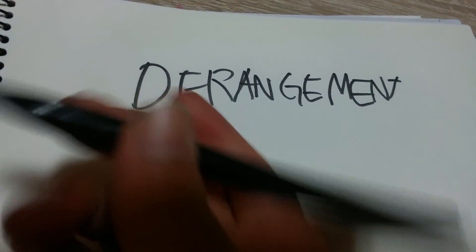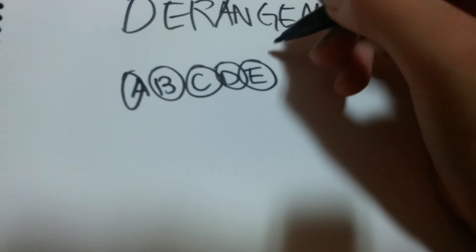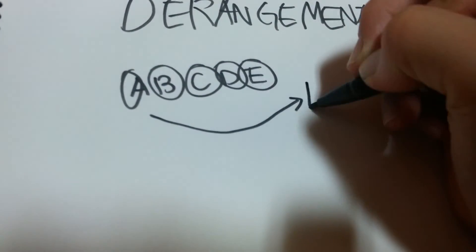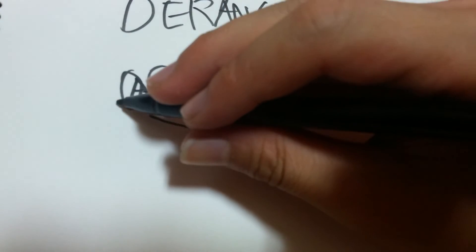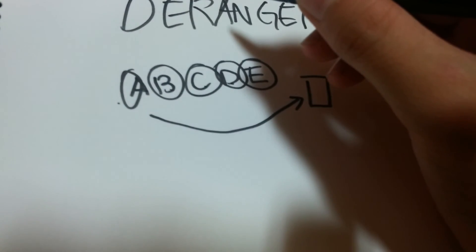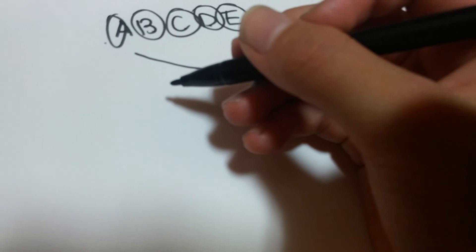Now let's talk about some harder stuff: derangements. Let's say there are 5 people — A, B, C, D, E — taking a mathematical exam. The professor has all the exam papers, and each person will correct someone else's paper, but not their own. There's no direct closed-form that's immediately obvious, but it works similarly to the Fibonacci series, where D(n) = D(n-1) + D(n-2).